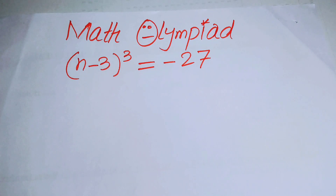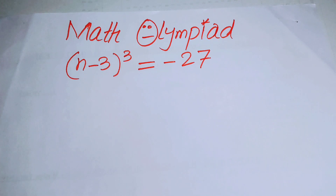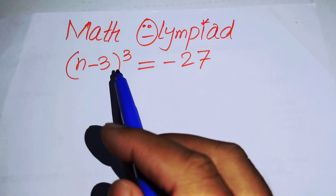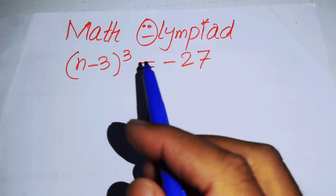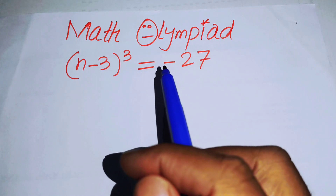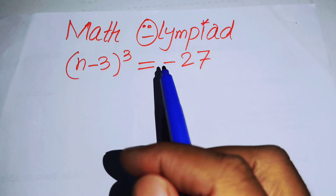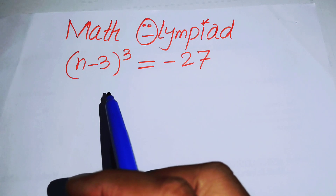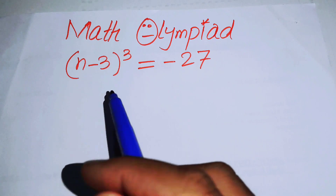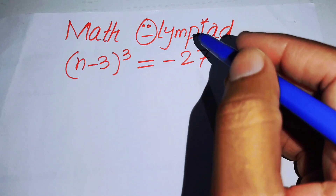Hello everyone, welcome back to the Map of Mathematics. In this video we are going to solve this nice algebra equation: (n minus 3) whole cubed equals minus 27. We will solve this problem for the real values of n.